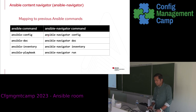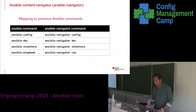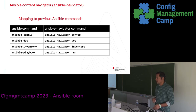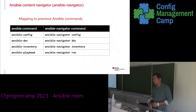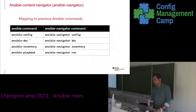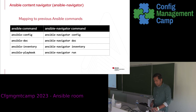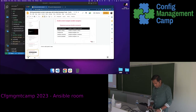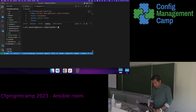Ansible config maps to Ansible Navigator config, Ansible doc to Ansible Navigator doc, Ansible inventory to Ansible Navigator inventory, and Ansible Playbook to Ansible Navigator run. Ansible Navigator uses Ansible Runner underneath. Ansible Runner then invokes each of the binaries. You can think of Ansible Runner as a wrapper on top of the Ansible executables — Ansible Navigator passes the command call to Ansible Runner and it does its thing.